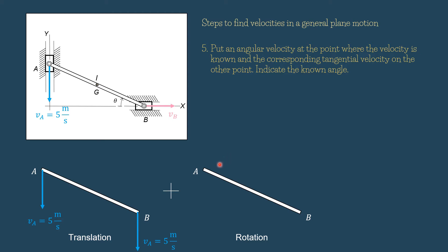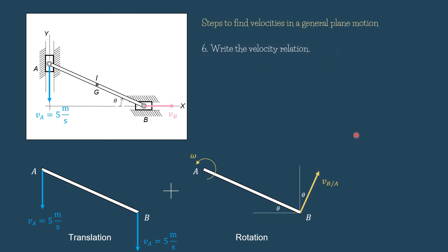Indicate the known angle. We draw it in the rotational diagram. We know that when A is moving down and B is moving to the right, the link AB will rotate in the anticlockwise direction. Due to this angular velocity at A, at B we are going to have a tangential velocity perpendicular to the link AB in the direction right upward. We name it VBA — that is the velocity of B relative to point A. We know the angle of AB with the horizontal is theta, so we put theta here and also theta there. This will help us in calculating the value later. Step six: write the velocity relation.